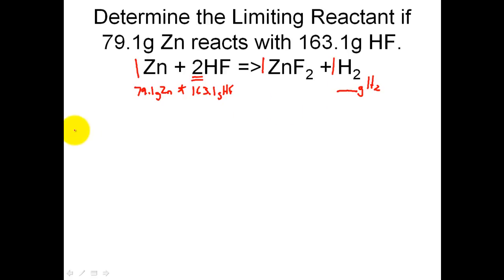So what we're going to do is set up a stoichiometry problem where I have 79.1 grams of zinc. And I'm also going to list the second reactant, 163.1 grams of hydrogen fluoride. I'm going to set these problems up and they're both going to end at the same place. I want to find out how many grams of H2 will each one of those individually produce. I'm going to use stoichiometry to get me the answer. So let's set the problem up.